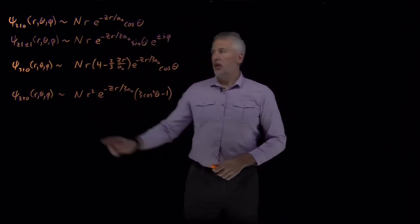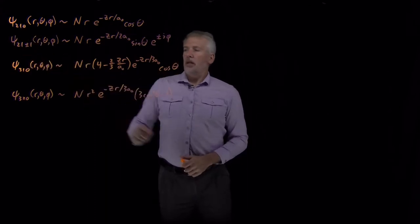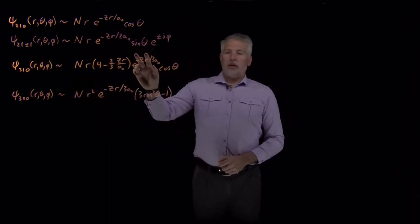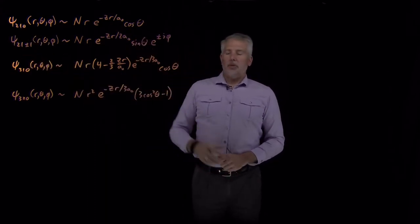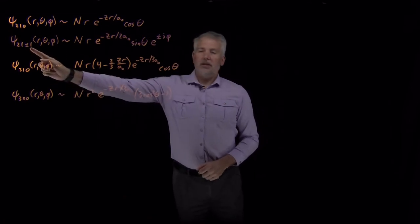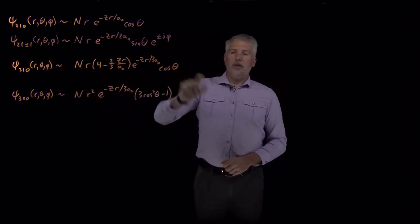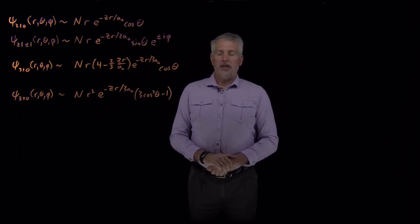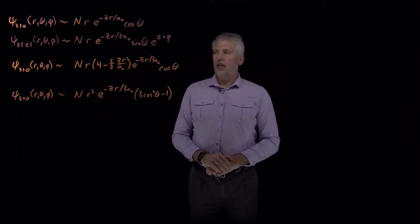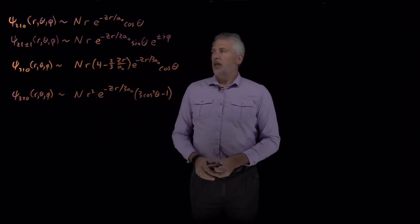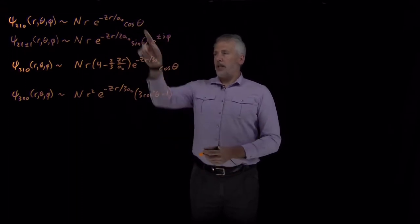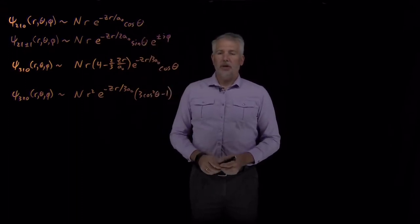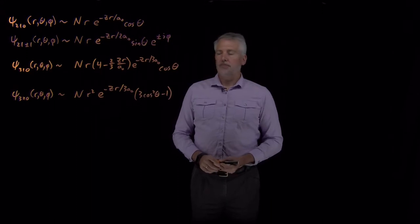For example, when l equals 1, we have some theta terms in the wave function. When m is non-zero — when it's plus or minus 1 in this case — we have e to the minus i phi or e to the plus i phi terms that show up in the exponential in the wave function. We'll take these first two cases and see if we can understand what the wave function would look like.